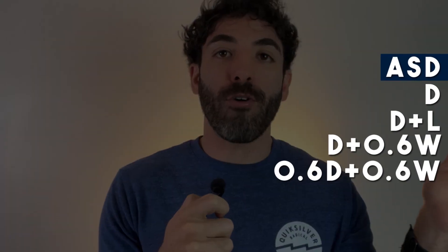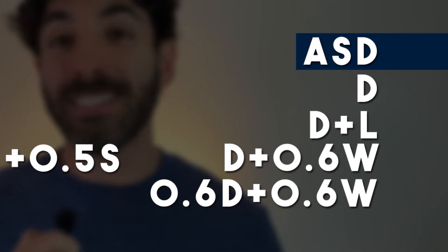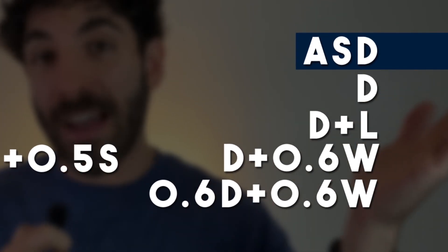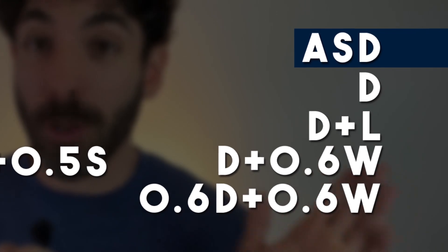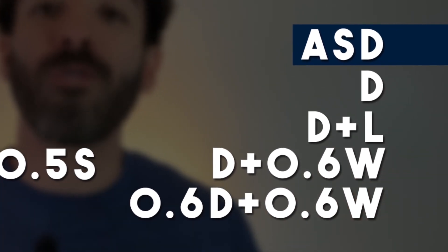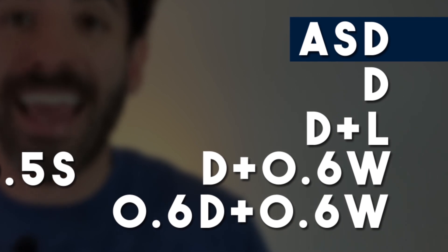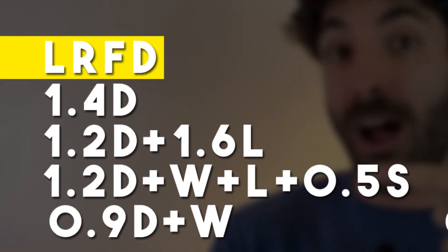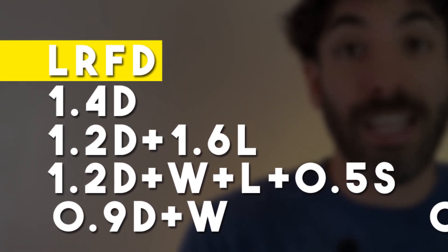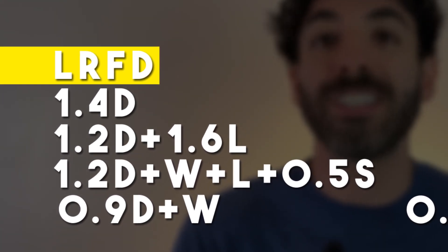To give you an example of typical load combinations per the American code: the ones on the left are for ASD and the ones on the right are for LRFD. For ASD, the load factors are one, except in some cases where loads are reduced to account for the probability of that load occurring simultaneously with all others. For LRFD, different load factors that vary according to the type of loading are applied.